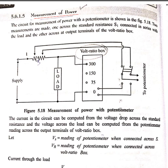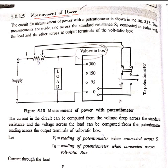In measurement of power, the circuit for measurement of power with a potentiometer is shown here. The potentiometer is connected with a supply and the load. A double throw switch is arranged so that the first position connects with standard resistance S1, which is connected with the load. The other terminal of the potentiometer connects to a volt ratio box, which indicates the output voltage across the load.